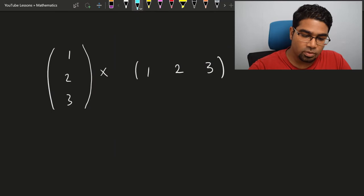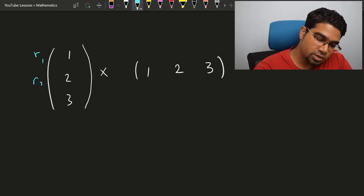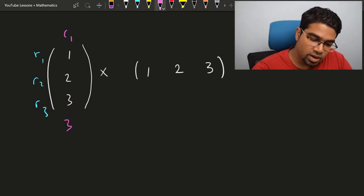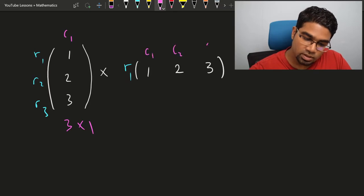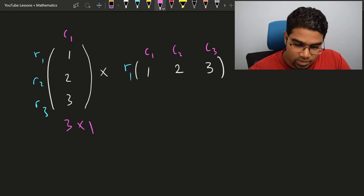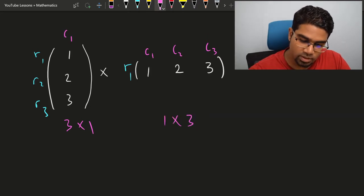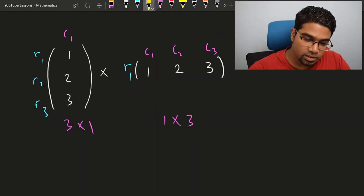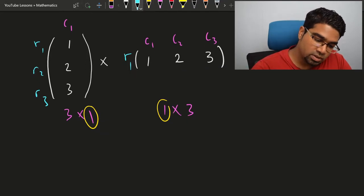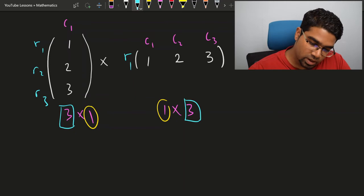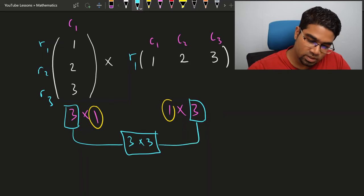Let's try one last example. Here we have three rows — R1, R2, and R3 — and a single column, so the order is 3 by 1. The second matrix has one row and three columns — C1, C2, and C3 — so the order is 1 by 3. These matrices can indeed be multiplied because the number in between is the same: 1 and 1. The product will have the order 3 by 3.